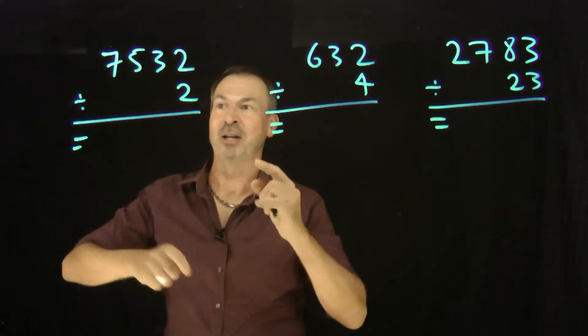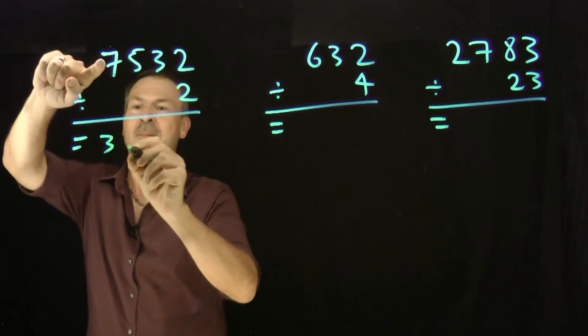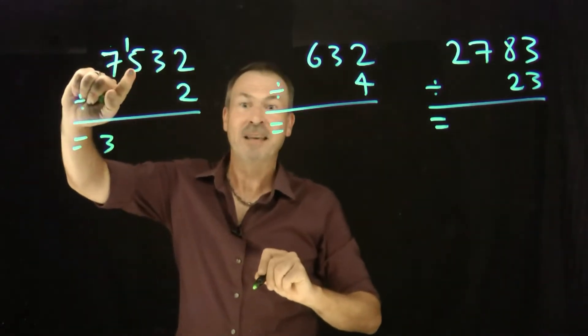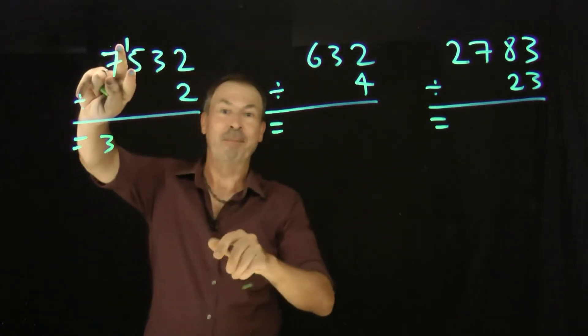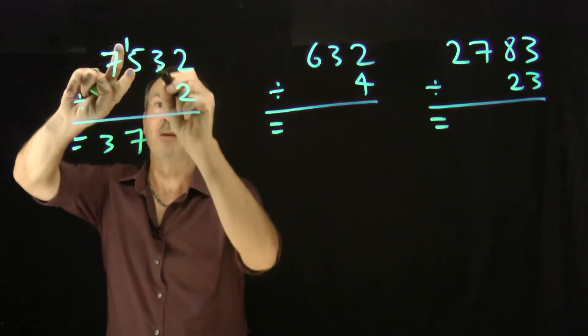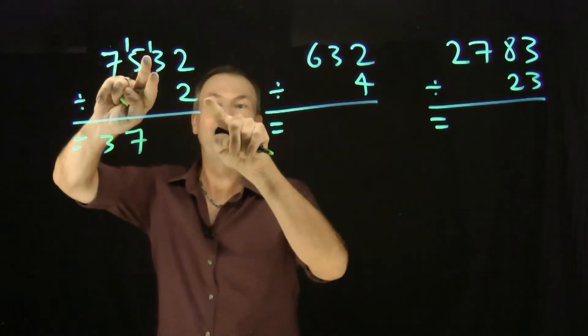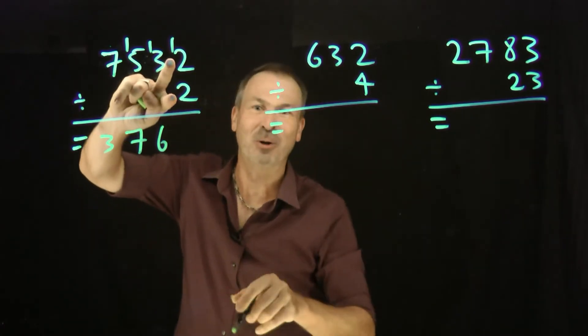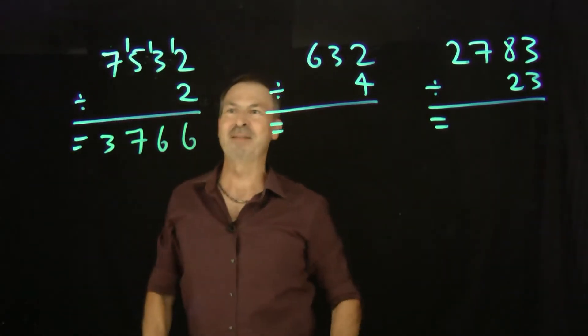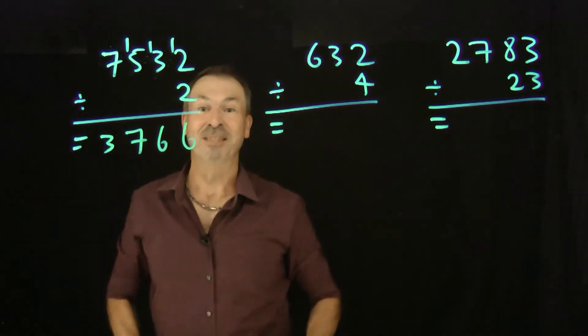All right, 7532 divided by 2. First look at the first digit. How many times does 2 go to 7? It goes in 3 times with 1 remaining. Now think of that 5 as 15 all of a sudden. How many times does 2 go to 15? I'm thinking 14. That goes in 7 times with 1 remaining. Now think of that 3 as having been changed to 13. How many times does 2 go to 13? 6 times is 12 with 1 remaining. And 2 into 12. How many times 2 go to 12? 6 times. 7532 divided by 2 really is 3766.